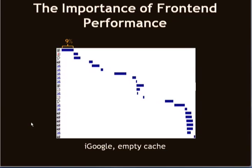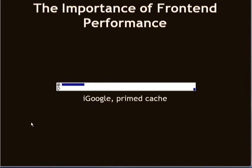The x-axis is time. Across the whole time the user is waiting for this page to load, only 9% of that time was spent getting the HTML document from the back-end — and that 9% even includes the time for the request to go to the server, for the server to stitch together the response, and for the HTML document to come back. The other 91% is what I call the front-end. For iGoogle with an empty cache, only 9% is spent on the back-end; the other 91% on the front-end. With a primed cache — a subsequent page view — it's still lopsided: 17% on the HTML document and 83% on the front-end.